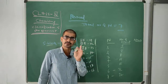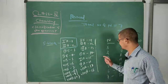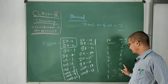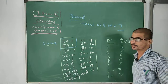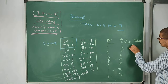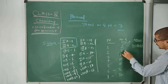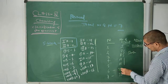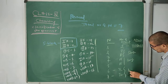The second period has 8 elements, the third also has 8, the fourth and fifth have 18 elements each, and the sixth and seventh have 32 elements each. Based on the number of elements, names are given: the first period is called the shortest period because it has only 2 elements. The second and third periods are called short periods. The fourth and fifth periods are called long periods, and the sixth and seventh are called the longest periods.